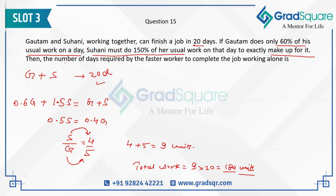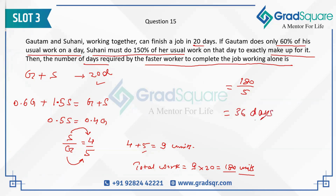Now the question asks for the number of days required by the faster worker to complete the job. The faster worker is Gautam. He is going to complete the job in 180 divided by 5 — since he does 5 units every day — which is going to be 36 days. So it will take 36 days for the faster worker to finish the complete job.